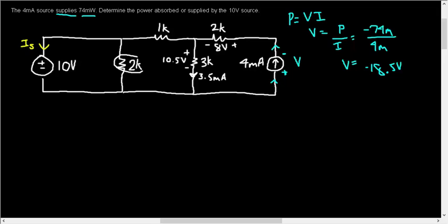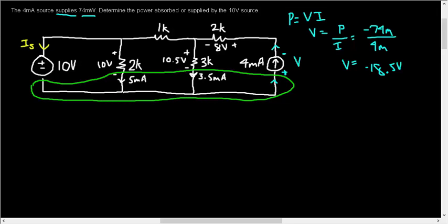This 2 kilo ohms over here is in parallel with the 10 volts. So matching polarity, plus minus 10 volts. Current will be going downwards because of passive sign convention once again. So now we can do KCL at this bottom node here and solve for IS.